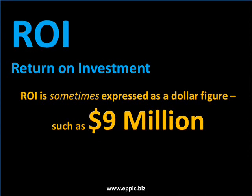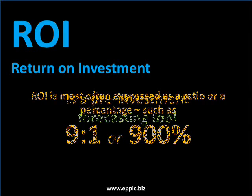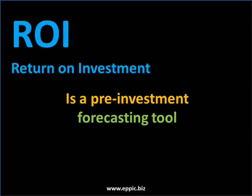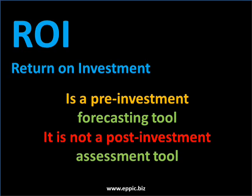ROI is sometimes expressed as a dollar figure such as $9 million, but that's not typical. ROI is most often expressed as a ratio or a percentage such as 9 to 1 or 900%. Return on investment is a pre-investment forecasting tool. It is not a post-investment assessment tool.